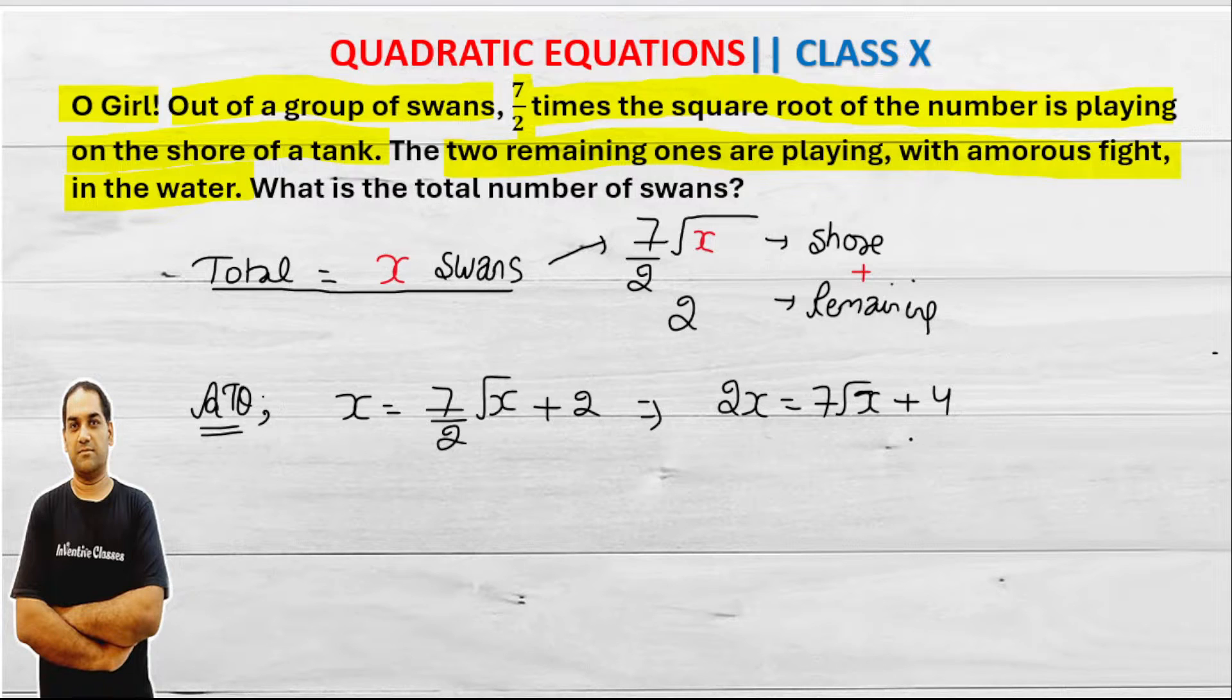No tension here, you'll understand. Take LCM, cross multiply, everything will be clear. Second thing, if I let here √x equal to y.